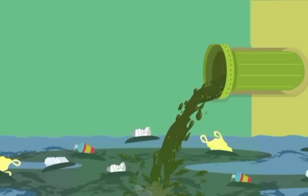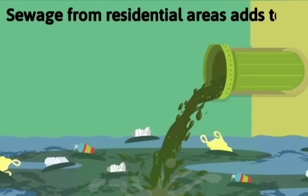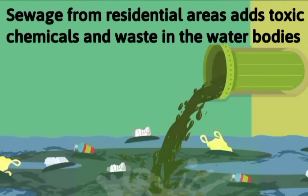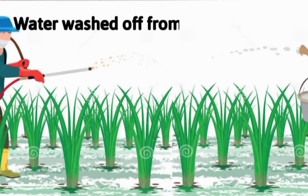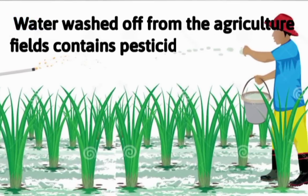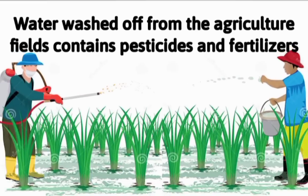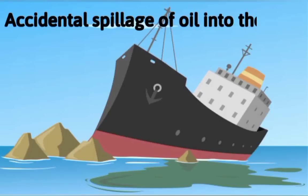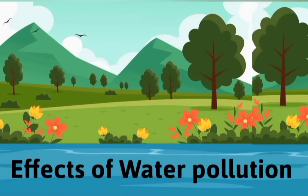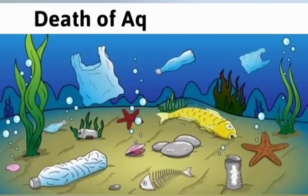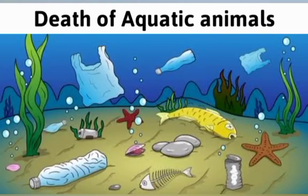Sewage from residential areas adds toxic chemicals and waste into water bodies, which again causes water pollution. Water washed off from agricultural fields contains pesticides and fertilizers that pollute the water. Accidental spillage of oil into the sea is one of the growing causes of water pollution.